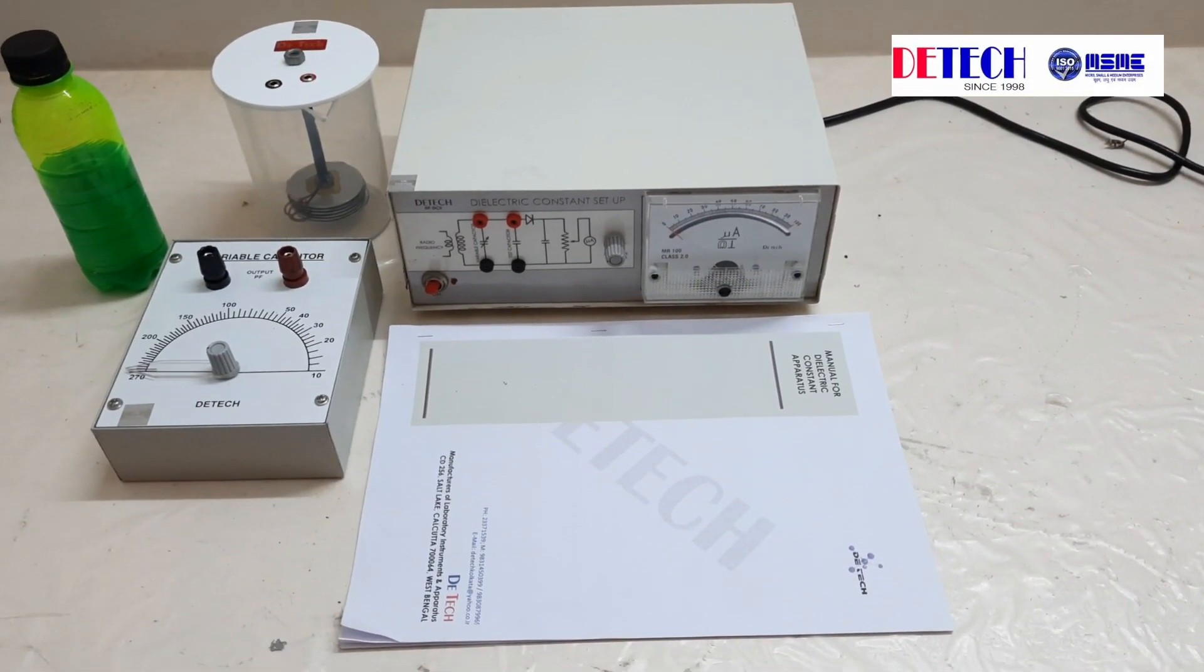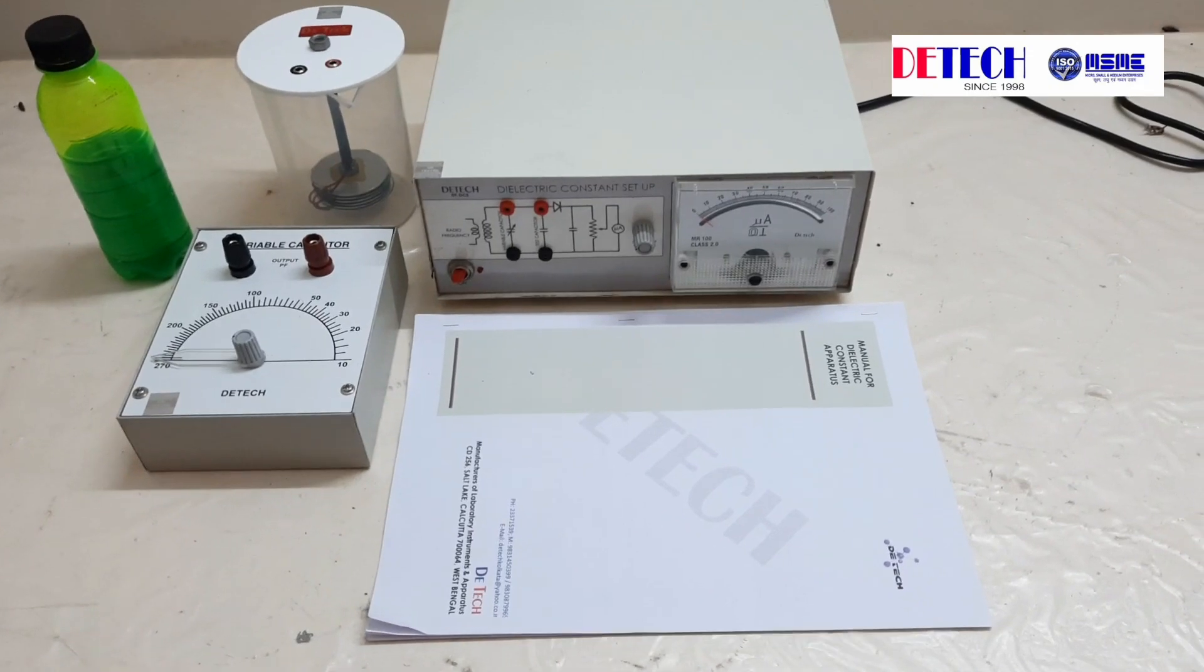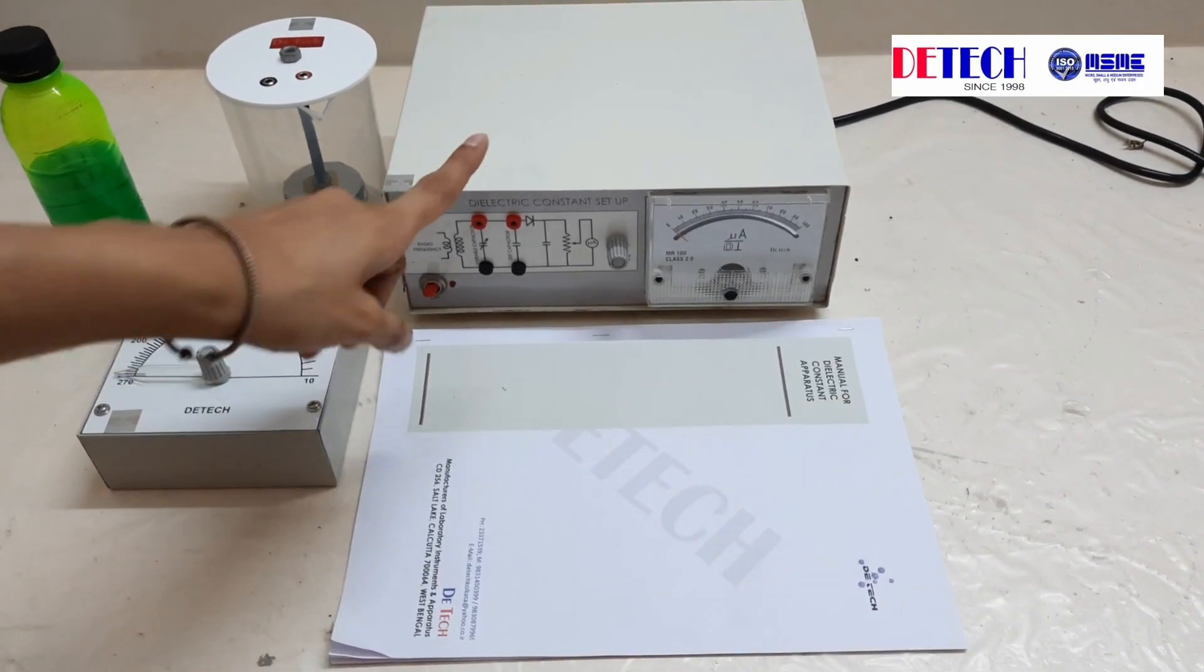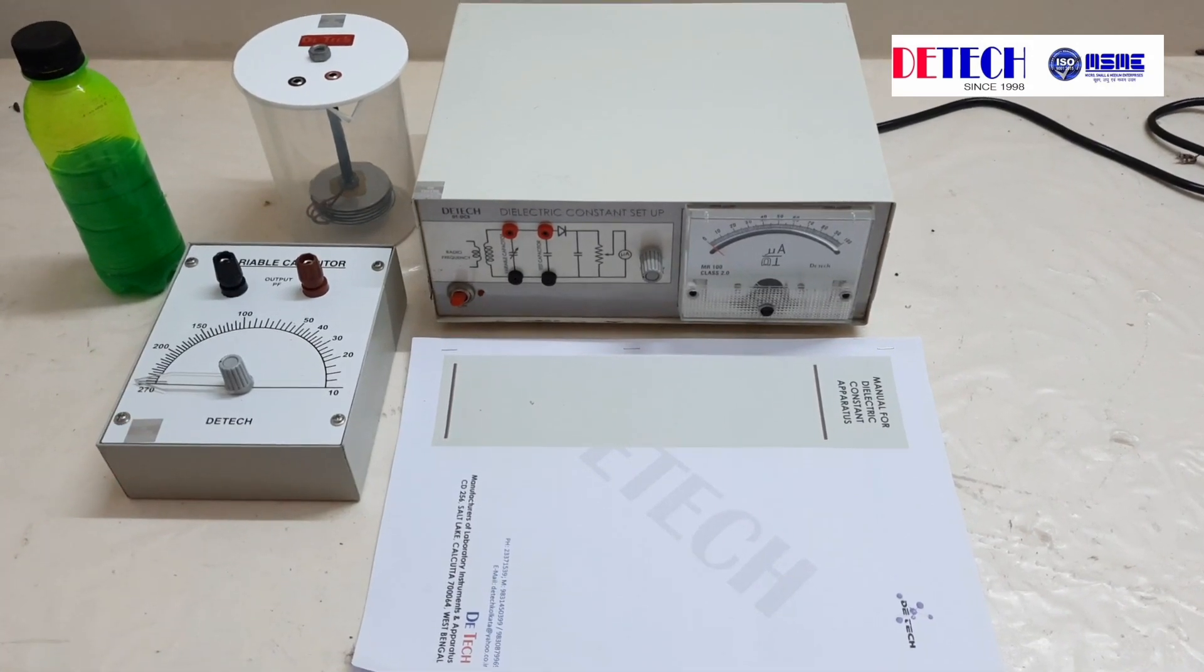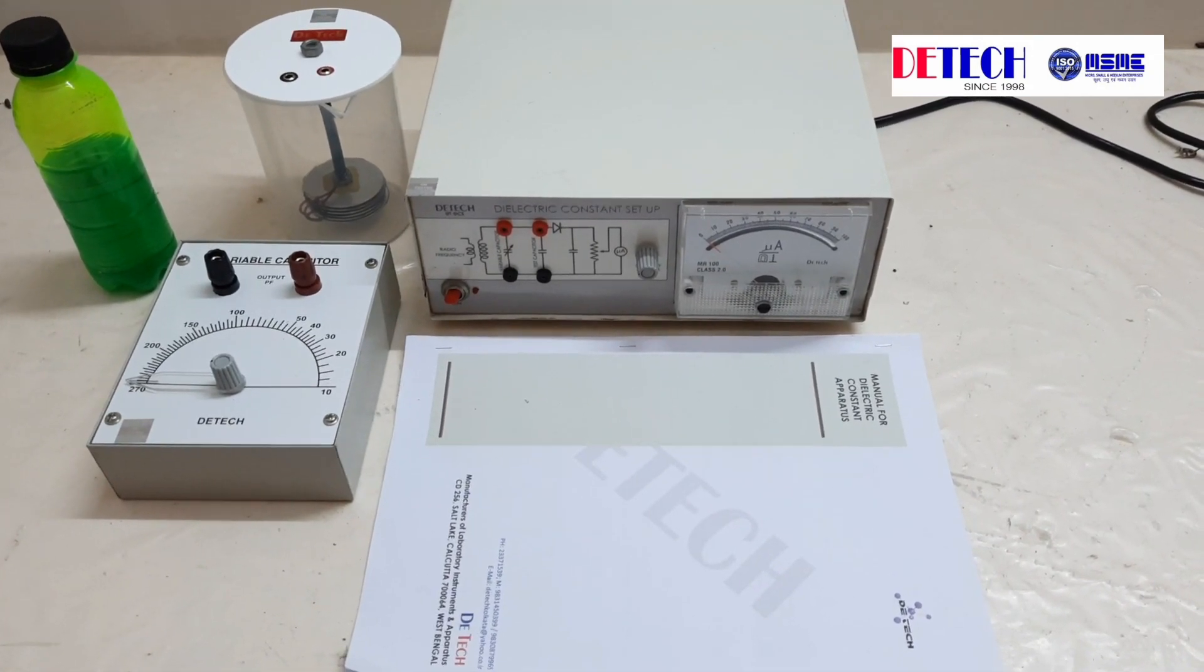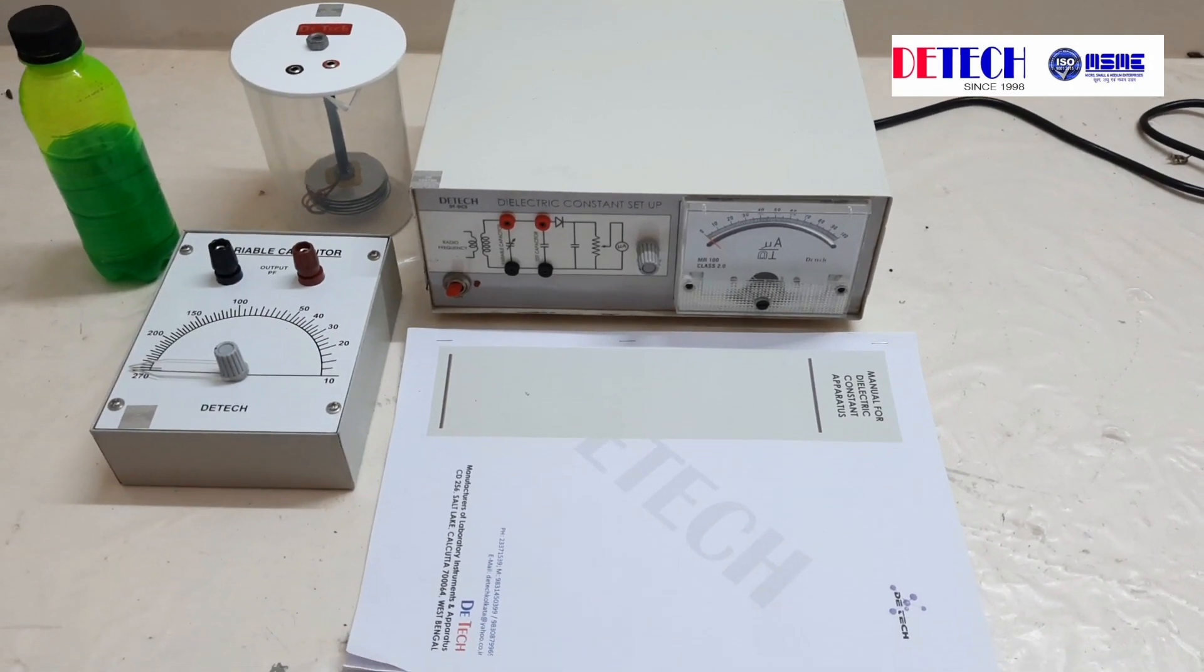This is our experimental setup for measuring the dielectric constant of a liquid. As you can see, we have a main unit which consists of an analog ammeter, then we have a variable capacitor box, the capacitor, and a beaker for holding the liquid.